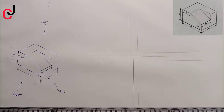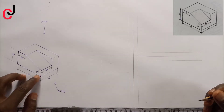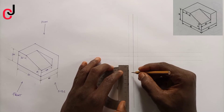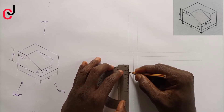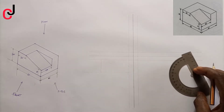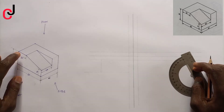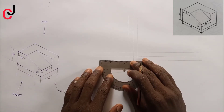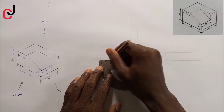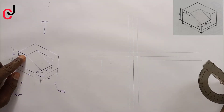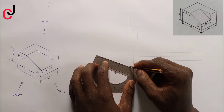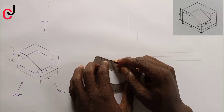From our diagram we have 15 mm height, so measure 15 mm and indicate the point. Then we have a 20 mm distance to my right, so measure 20 mm to the point. There's a slant line joining the 20 mm and 15 mm points, so join them with a straight line.